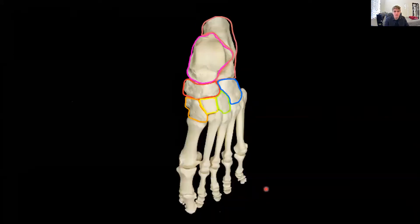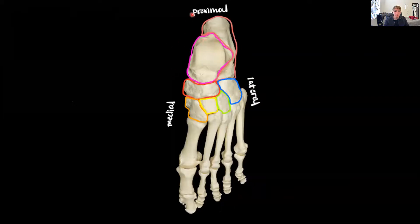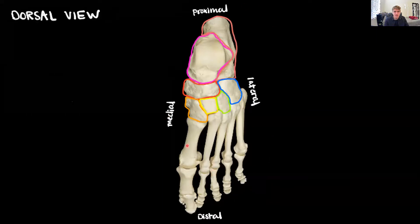Now let's change our view and talk about the tarsal bones. Let's get oriented: medial, we can see the big toe; lateral is the other side. Proximal is up where the tarsal bones are and the ankle joint would form; distal is down at the tips of the toes. This is going to be a dorsal view, because we're looking at the dorsal surface of the foot.